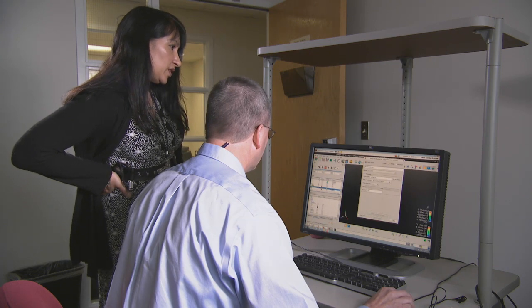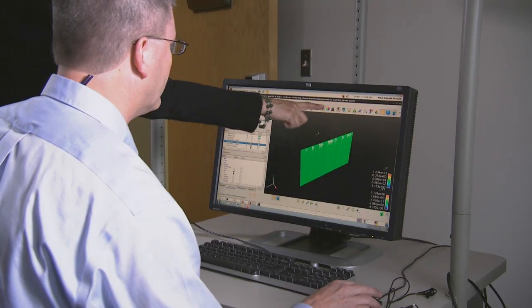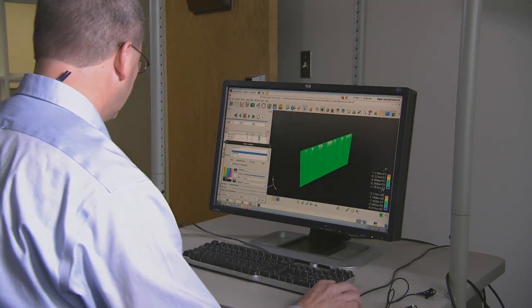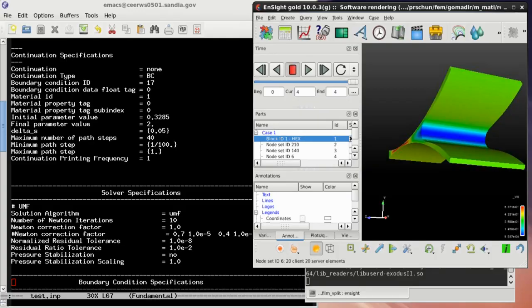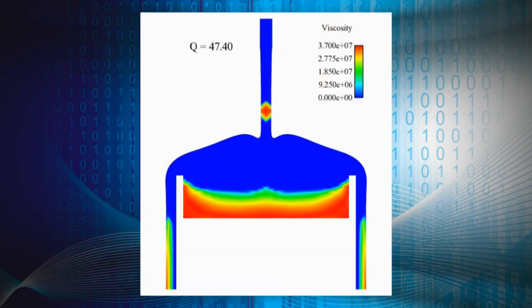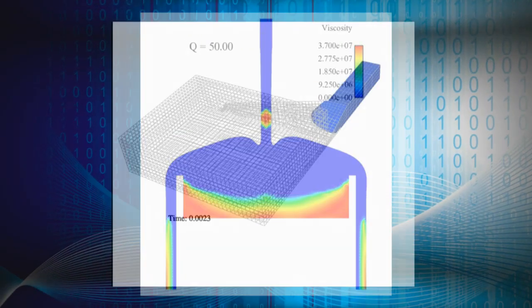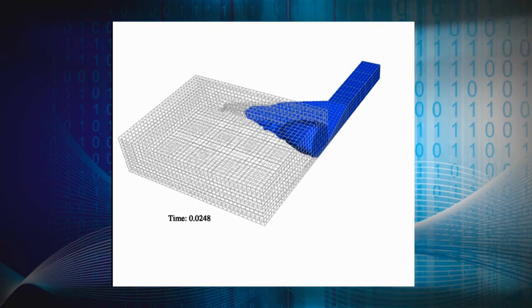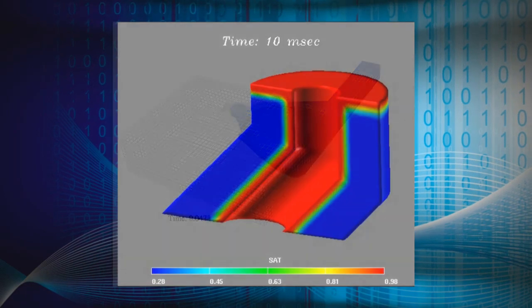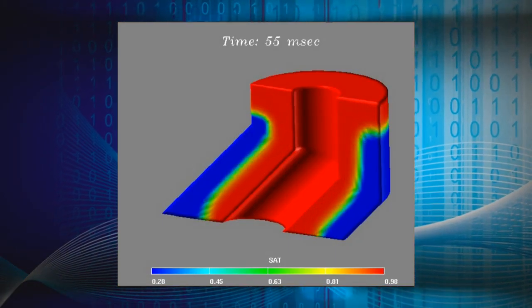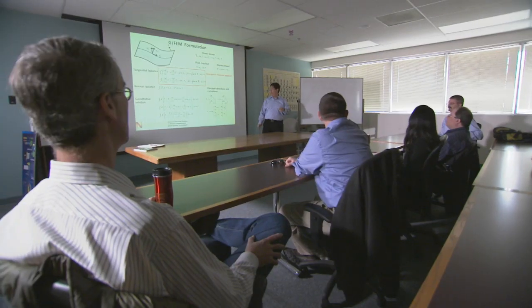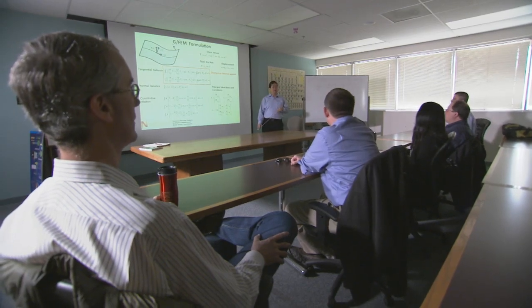GOMA 6.0 is the first general-purpose finite element multi-physics code with production capabilities that is open-sourced and freely available. It solves large-scale conservation equations — equations of motion, mass conservation, heat transfer, etc. Its main strength and foundation is its ability to accommodate what we call free and moving boundaries, and it does so in a unique way by treating the entire domain as an elastic solid.